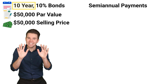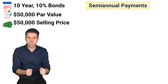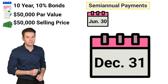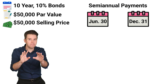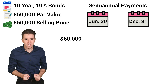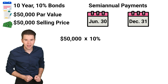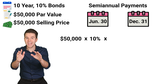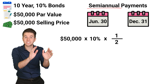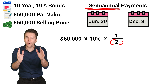For each of the next 10 years, the company will need to make semi-annual interest payments on June 30th and December 31st. To compute the payment, we take the $50,000 PAR value, multiply it by the 10% annual contract rate, and multiply that by 1/2 because these are semi-annual payments, meaning twice per year.